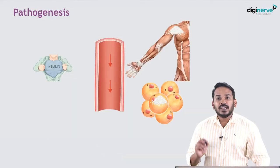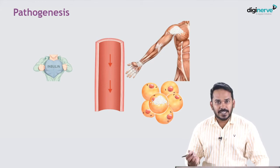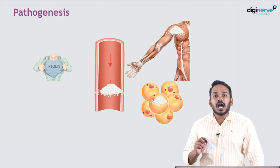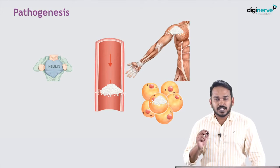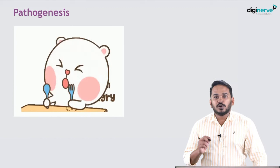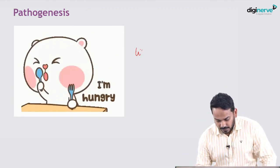In diabetic ketoacidosis there will be reduced insulin secretion, and this will reduce the utilization of glucose by tissues. Glucose will stay in the plasma, increasing plasma glucose levels. Even though there are large amounts of glucose in the plasma, the tissues are not able to utilize it, so tissues are in starvation.